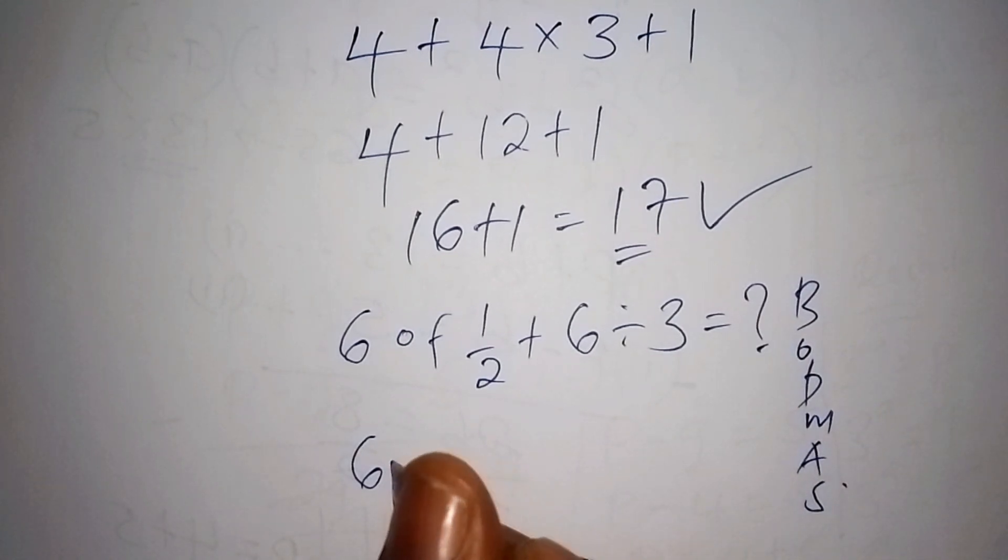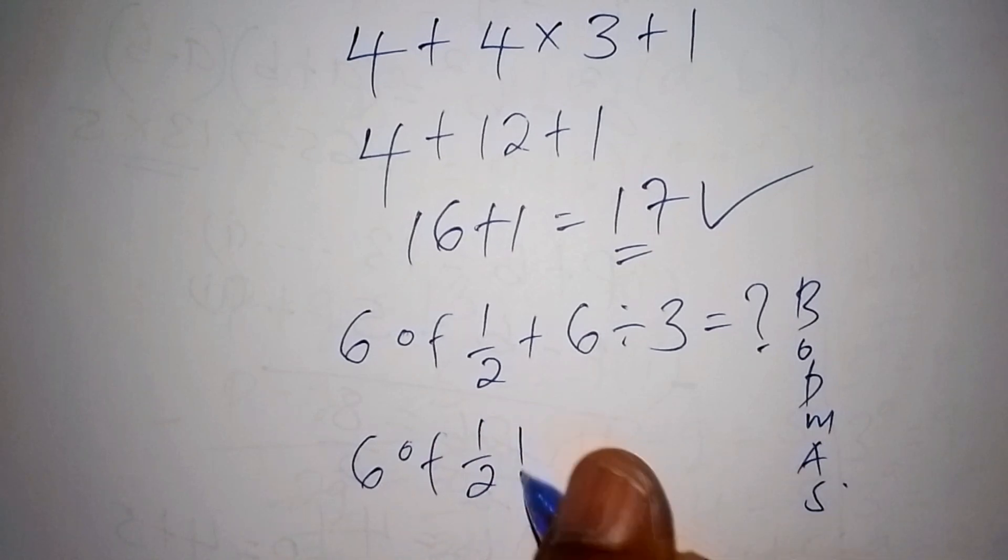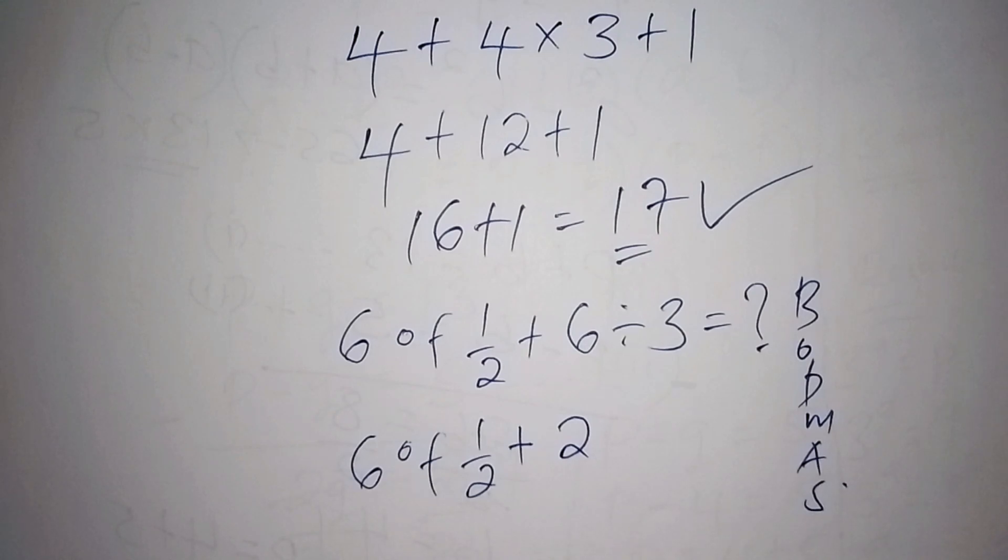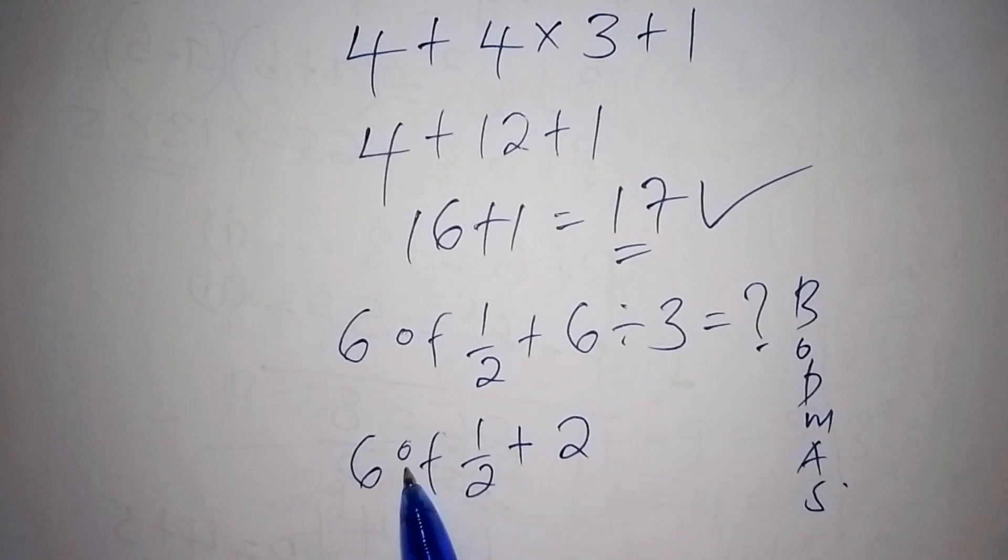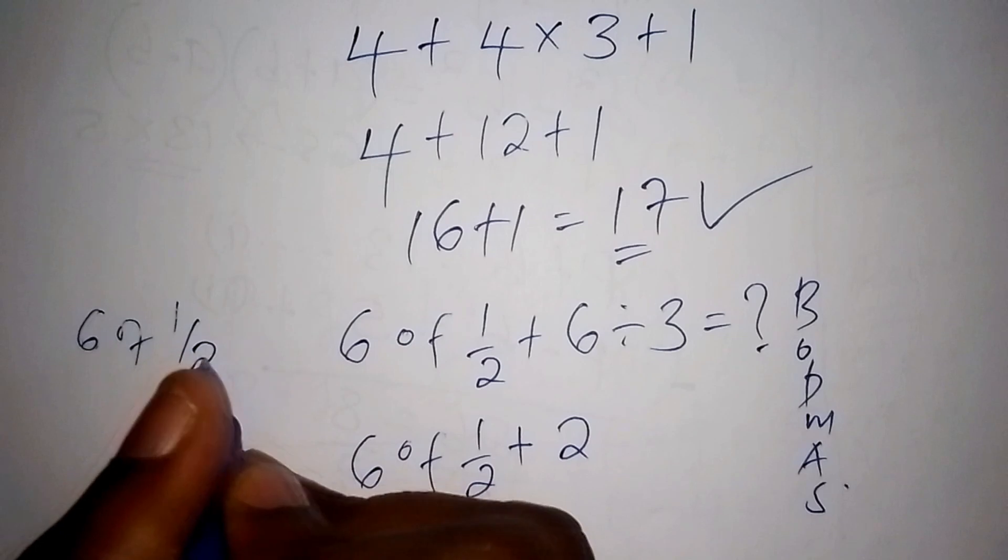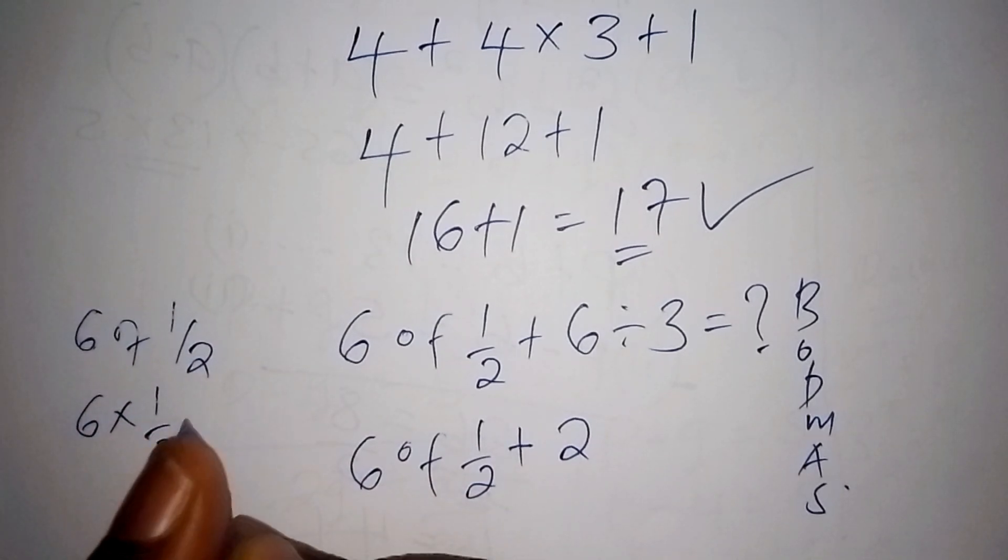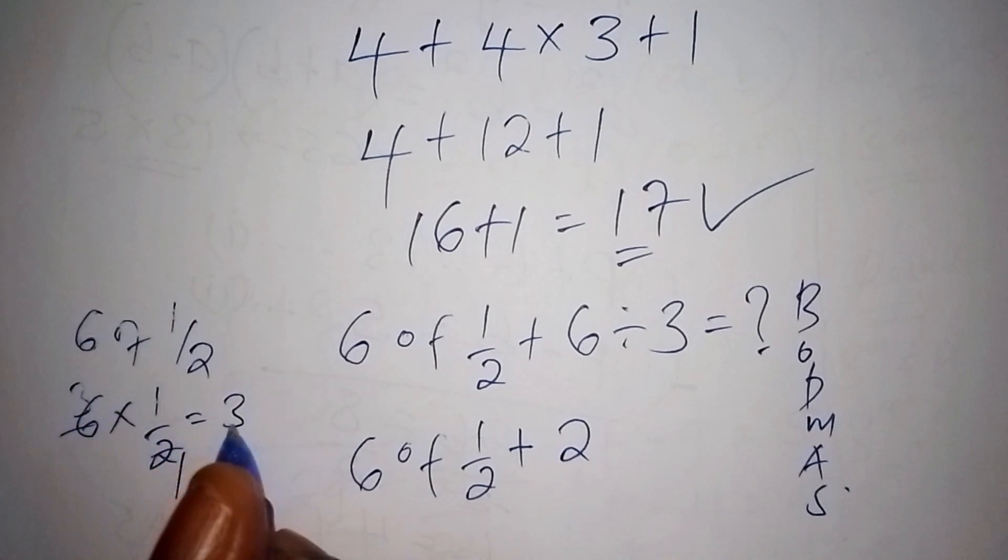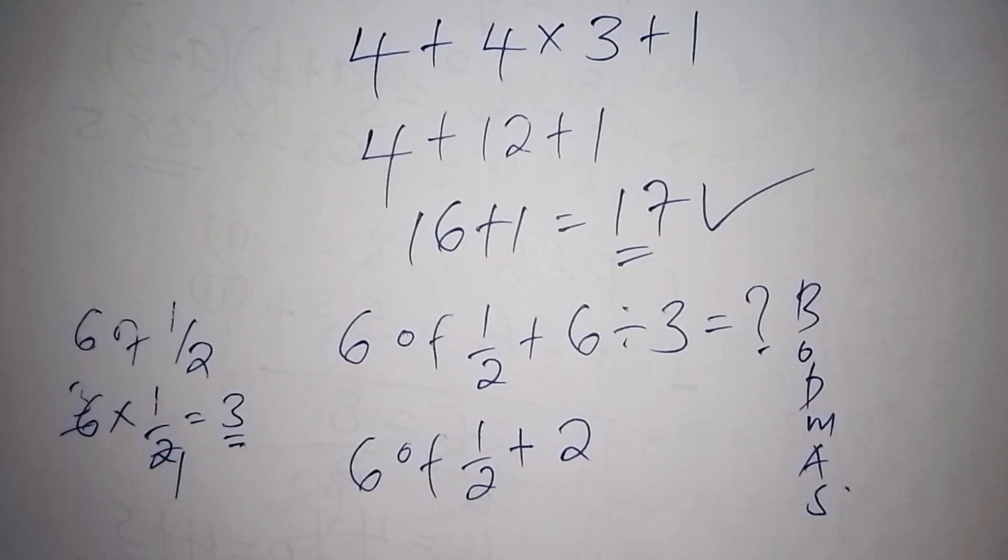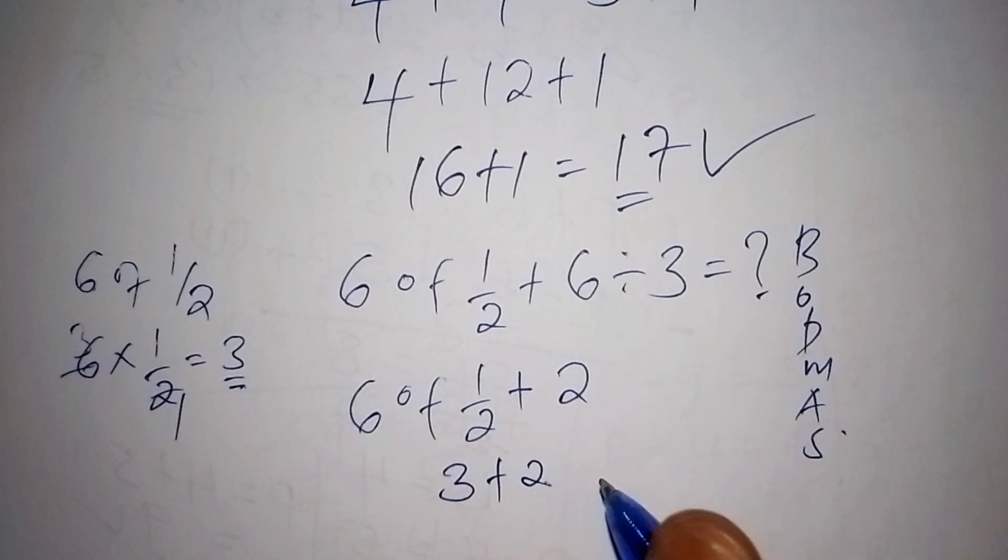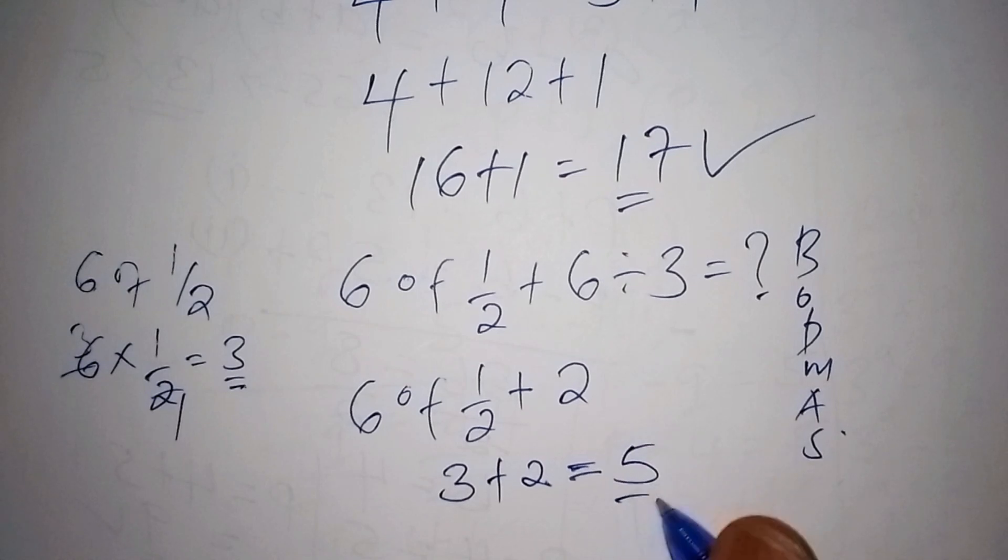So now we shall have 6 of a half, then plus 6 divided by 3 is 2. So from here, we work out 6 of a half. 6 of a half is 6 times a half. 2 goes into 6 three times, and 3 times 1 is 3. So 6 of a half equals 3. Now we have 3 plus 2, and our answer becomes 5.